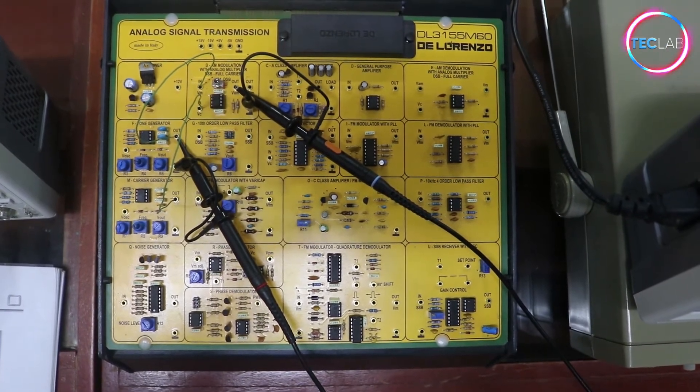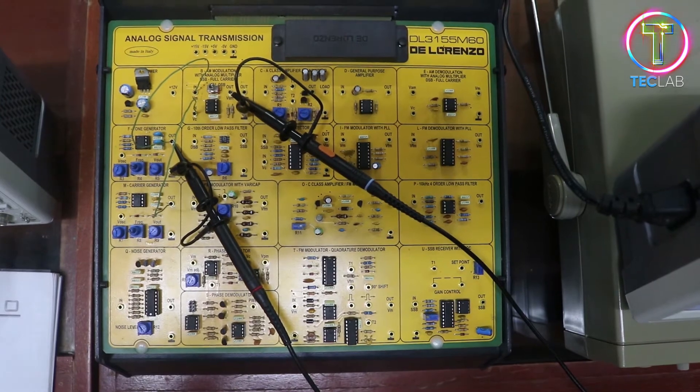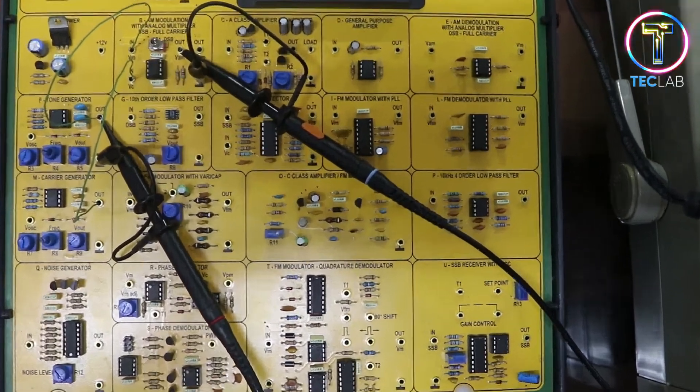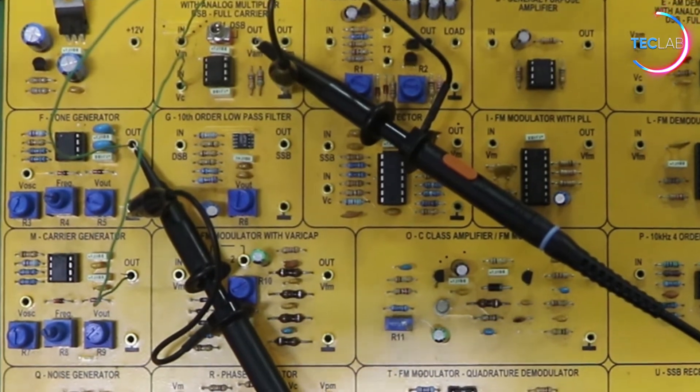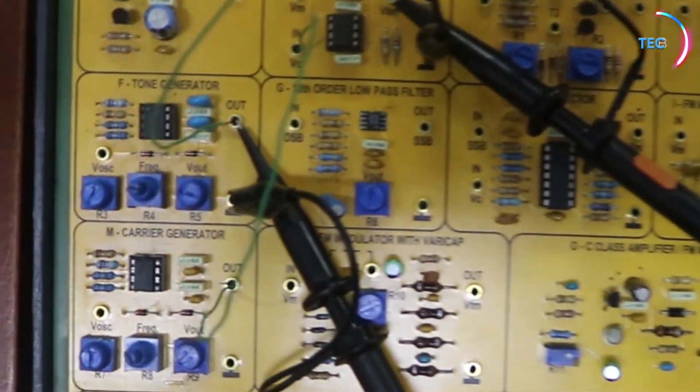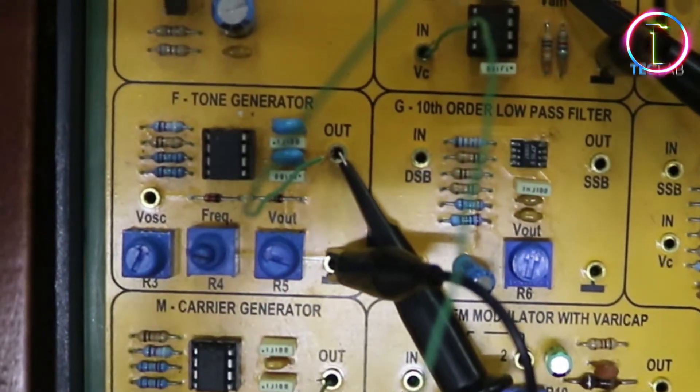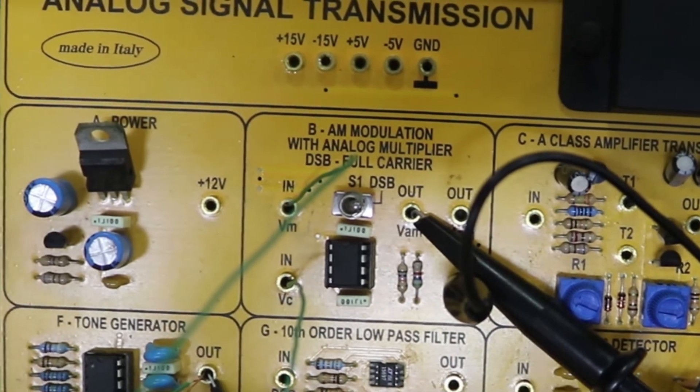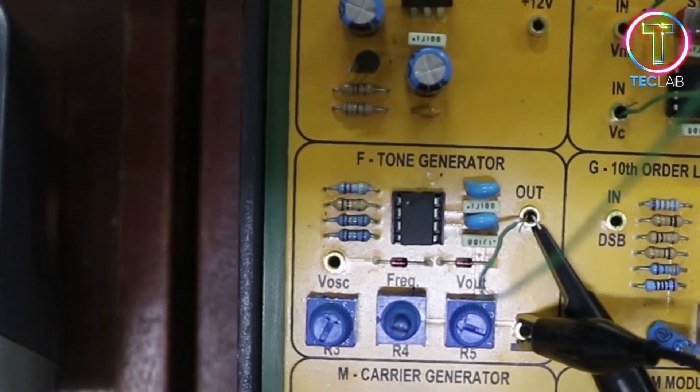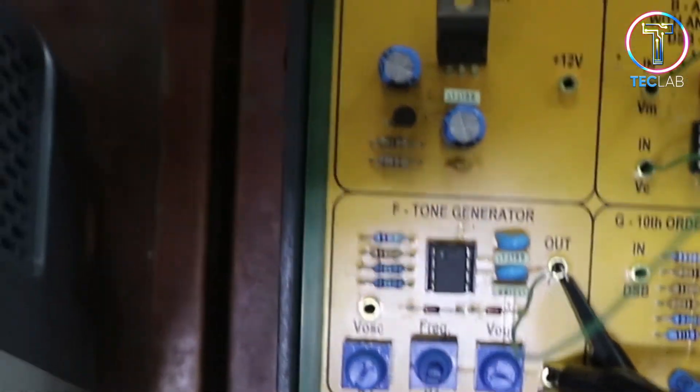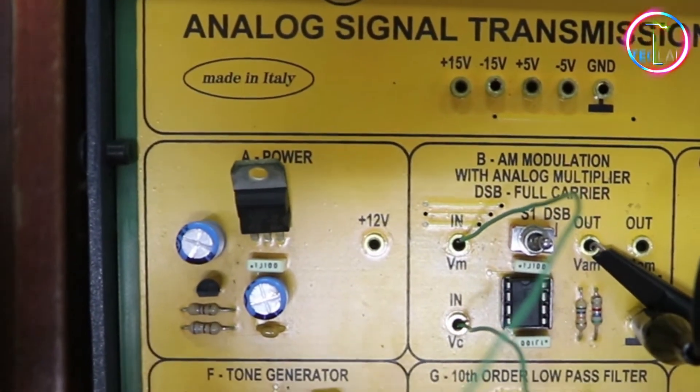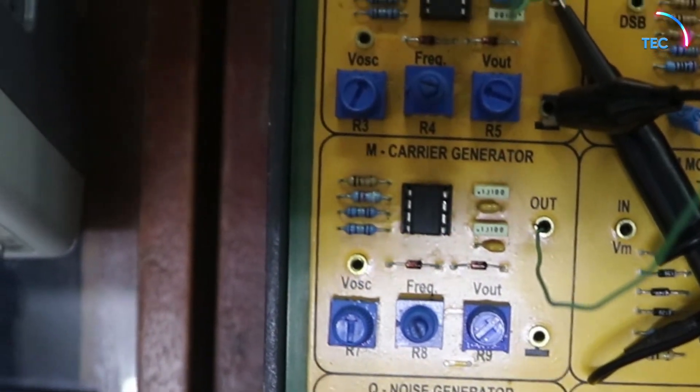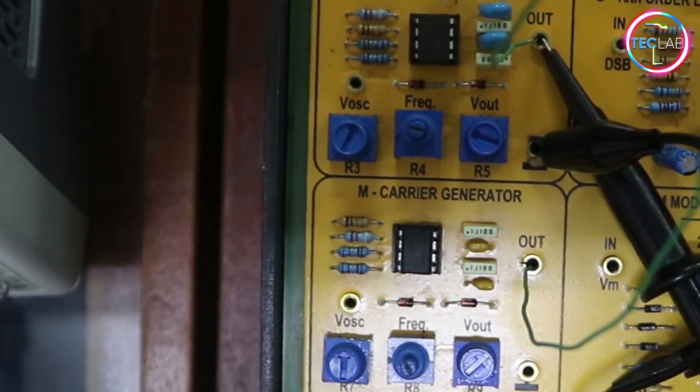Connect the circuit as shown. Channel 1 of the oscilloscope will be connected at the output of module F. Channel 2 of our oscilloscope will be connected at the output of module B. The output of module F will be connected to the input of module B at point Vm. And the output of module M will be connected to the input of module B, Bc.